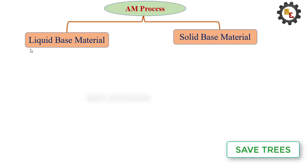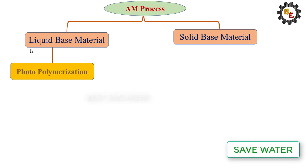All liquid-based materials work under the photopolymerization process. Photopolymerization is the process where the liquid is in monomer form, and when UV rays fall on that liquid it gets polymerized — that is called photopolymerization.